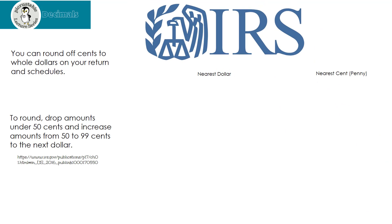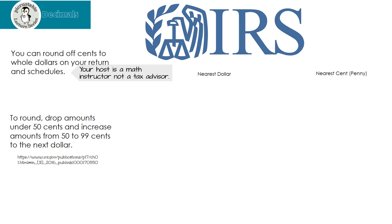The IRS actually explains how to round money. You can round off cents to the whole dollar on your return and schedules. To round, drop amounts under $0.50 and increase amounts from $0.50 to $0.99 to the next dollar. I'm an instructor, not a tax advisor — so if the IRS starts knocking on your door because you rounded wrong, don't blame me. I'm just telling you what it says.